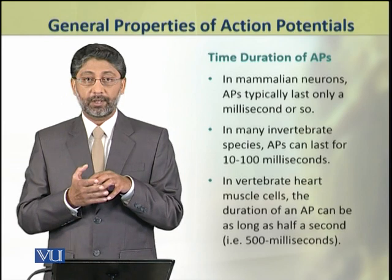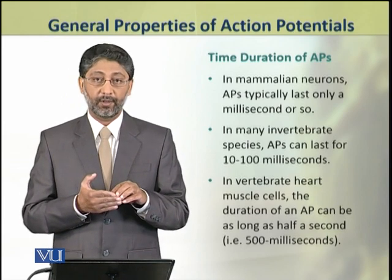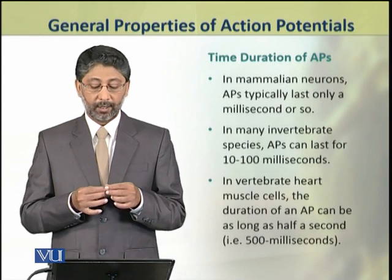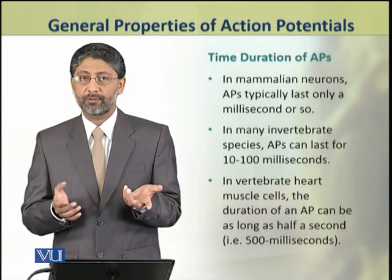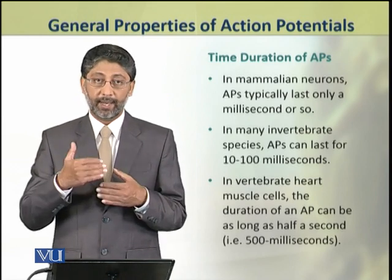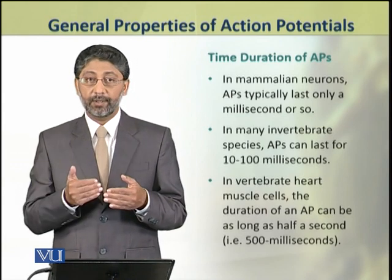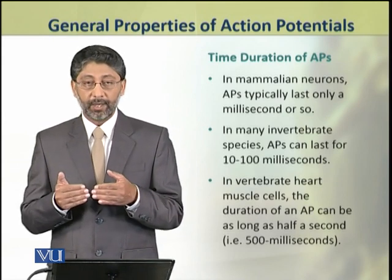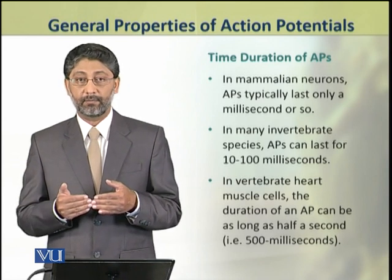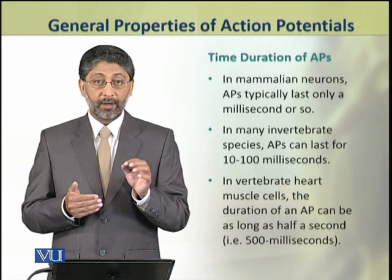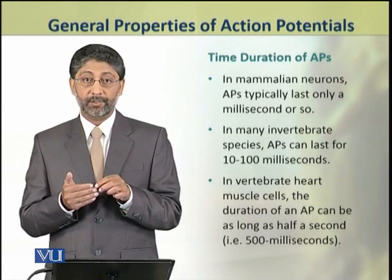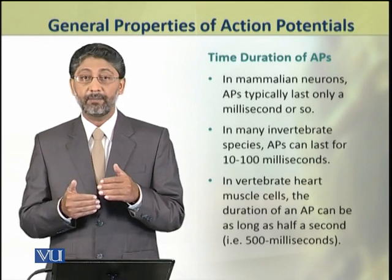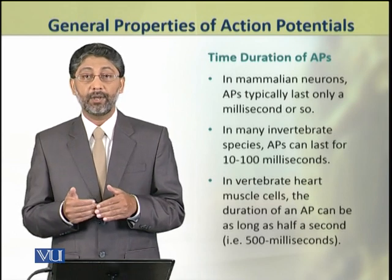The time duration of an action potential varies across cell types. In mammalian neurons of the peripheral nervous system, it typically lasts only 1 to 2 milliseconds. In invertebrate neurons, action potentials last about 10 to 100 milliseconds. In heart muscles, action potentials have even longer durations — up to about 500 milliseconds — which is required for the regulation of the cardiac cycle.